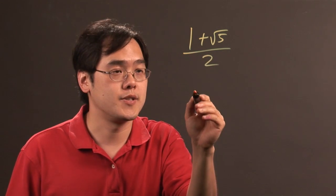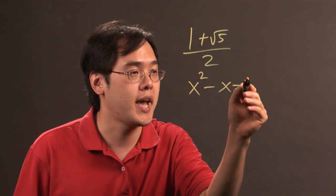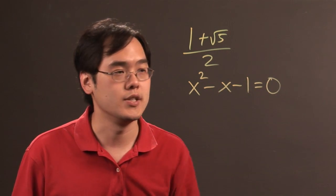Now the way you develop this number is through this particular quadratic equation: x squared minus x minus 1 equals 0.